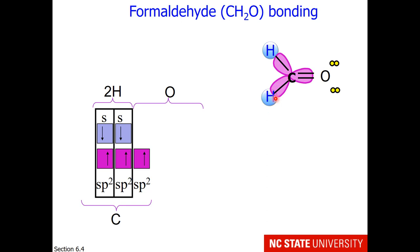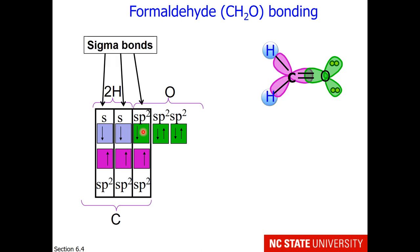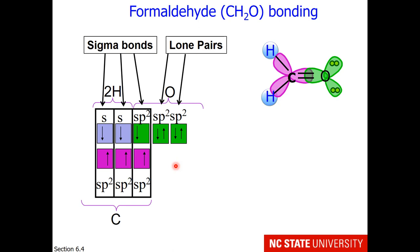Now what about the oxygen? The oxygen has three electron regions as well, so I will draw the three hybrid orbitals. One of these is overlapping with carbon — that would be the sigma bond between carbon and oxygen. And those are our three sigma bonds in the molecule. Oxygen has two lone pairs, so the remaining hybrid orbitals hold the lone pairs. Our hybrid orbitals are for sigma bonds and lone pairs.